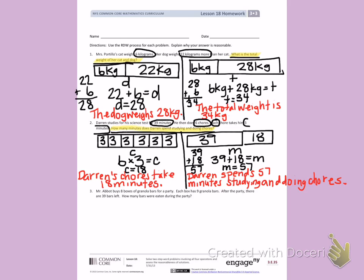Number 3, let's read. Mr. Abbott buys 8 boxes of granola bars for a party. Each box has 9 granola bars. After the party, there are 39 bars left. How many bars were eaten during the party? I know Mr. Abbott buys 8 boxes. Each box has 9 granola bars. And there are 39 bars left after the party. So with my highlighter, how many bars were eaten during the party?